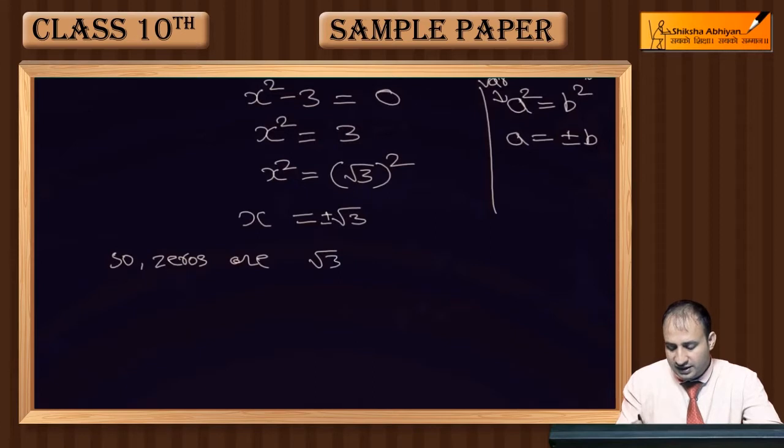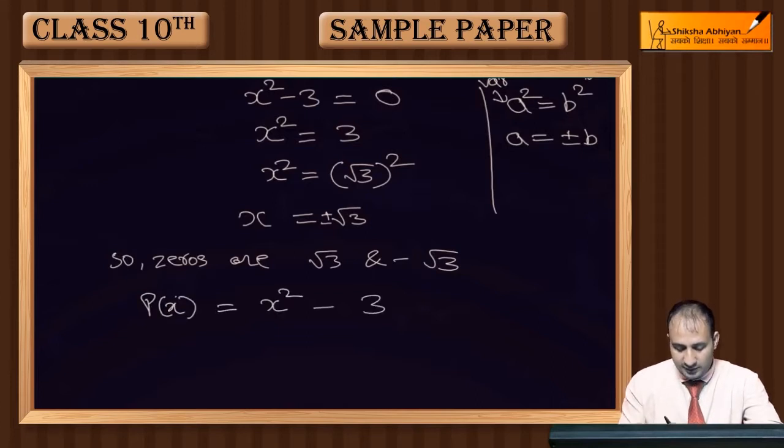Now let's look at the sum of zeros. If we write this polynomial as P(x) = x² - 3, here the coefficient of x² is 1.